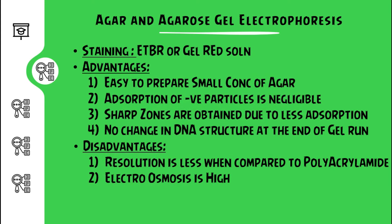With respect to staining, EtBr is added during the casting process, or alternatively the gel after the gel run could be immersed in gel red solution for 15 to 20 minutes. The advantages of agarose gel electrophoresis are that we can prepare small concentrations of agar or agarose, absorption of negative particles is negligible, and sharp zones are obtained due to less absorption. No change in DNA structure at the end of the gel run is seen.